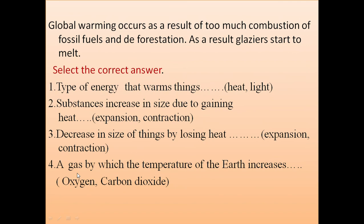Global warming occurs as a result of too much combustion of fossil fuels and deforestation. As a result, glaciers start to melt. Now you can answer these review questions: select the correct answer for each — type of energy that warms things (heat or light?), substances increase in size due to gaining heat (expansion or contraction?).